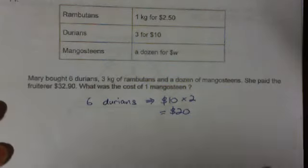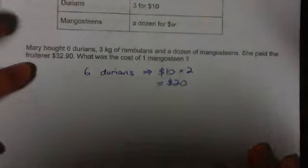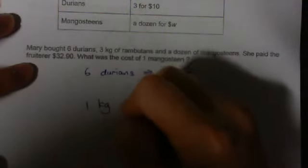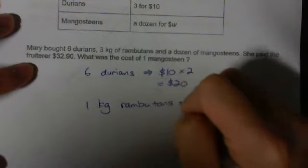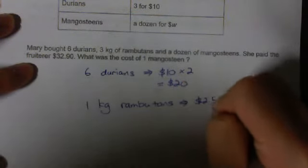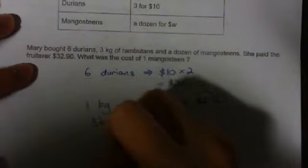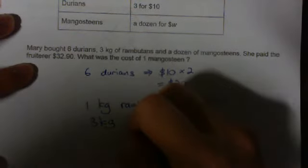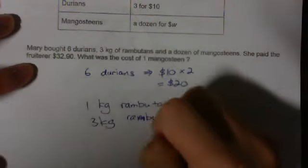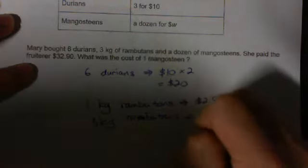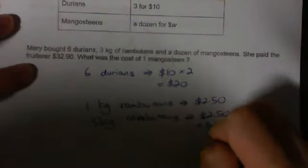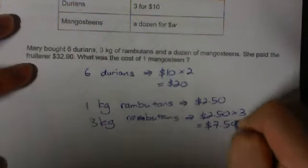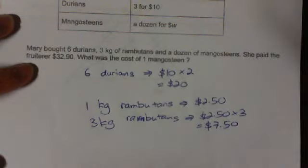Next, 3 kg of rambutans. 1 kg of rambutans is $2.50. 3 kg will be $2.50 times 3 equals $7.50.